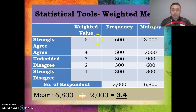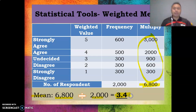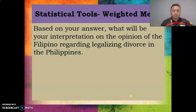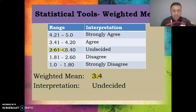Multiply weighted value by frequency: 5×600=3,000, 4×500=2,000, 3×300=900, 2×300=600, 1×300=300. Adding all results gives 6,800. Divide 6,800 by 2,000 to get the weighted mean of 3.4. Based on the interpretation range, 3.4 falls in the Undecided range, so the interpretation of Filipino opinion on legalizing divorce is 'Undecided.'